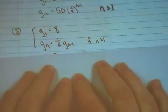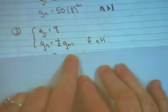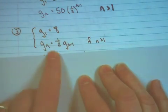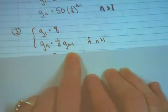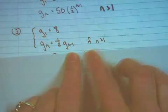Let's look at a third example. Here's the recursive formula: g sub 1 is equal to 8, g sub n is equal to 1 half multiplied by g sub n minus 1 if n is greater than 1.